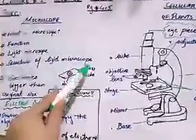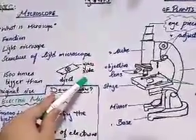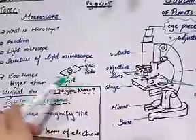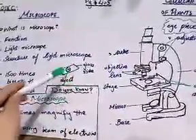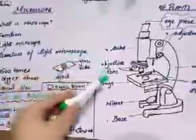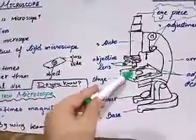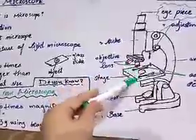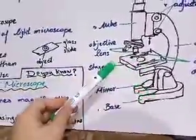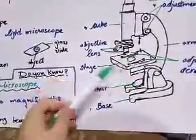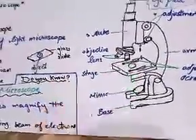Now, we keep the object on the stage. First, we need a glass slide, which is rectangular in shape. We place the object on the slide on the stage, just below the objective lens. Below the stage is the mirror, which reflects light toward the object.